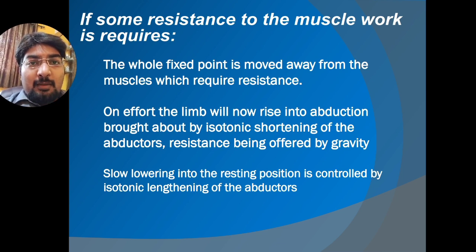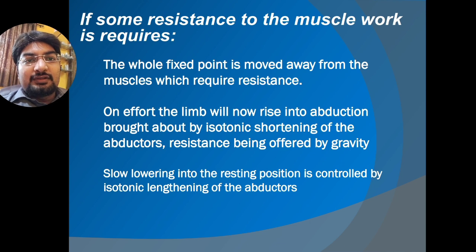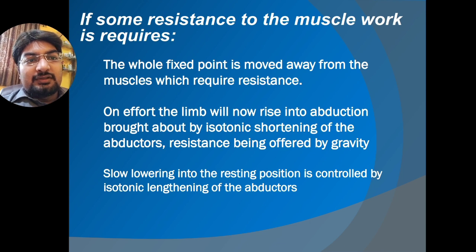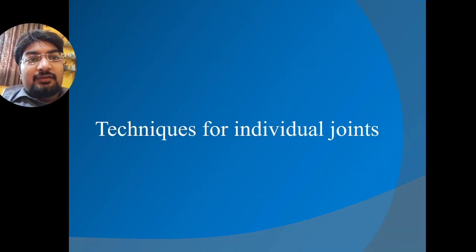Disadvantages include the requirement of a lot of space, and the patient must be transferred from the bed or wheelchair to the plinth under the suspension unit. When resistance to muscle work is required, the fixed point is moved away from the joint. On effort, the limb rises into abduction by isotonic shortening of the abductors, while slower lowering is controlled by isotonic lengthening of the abductors.